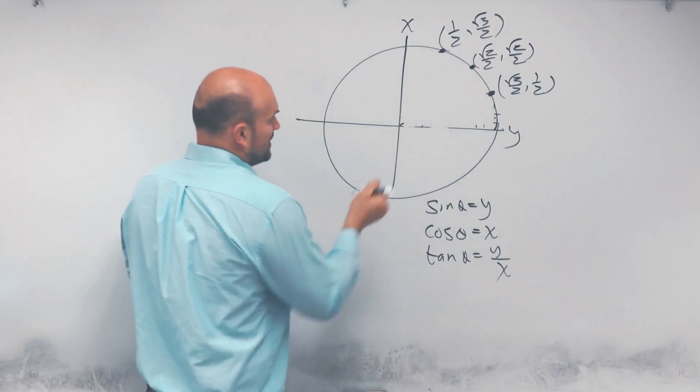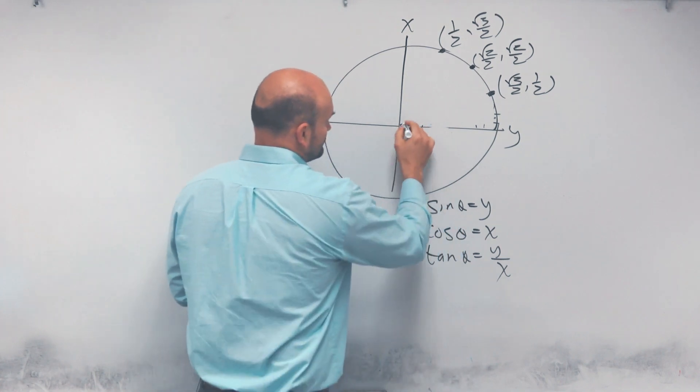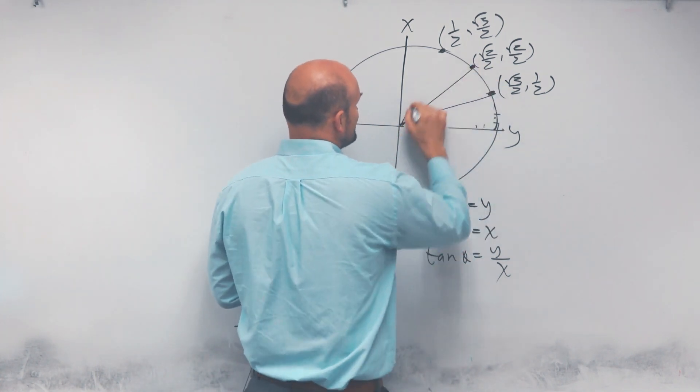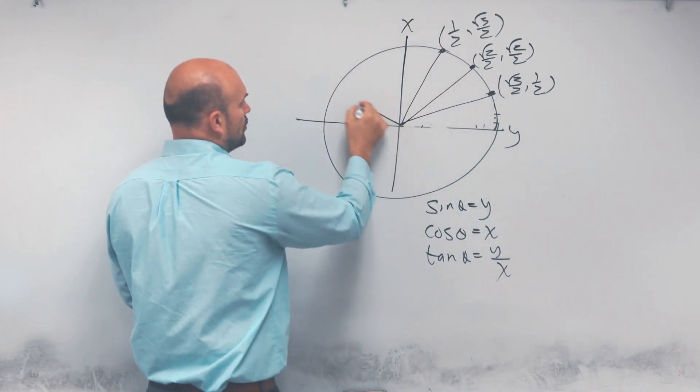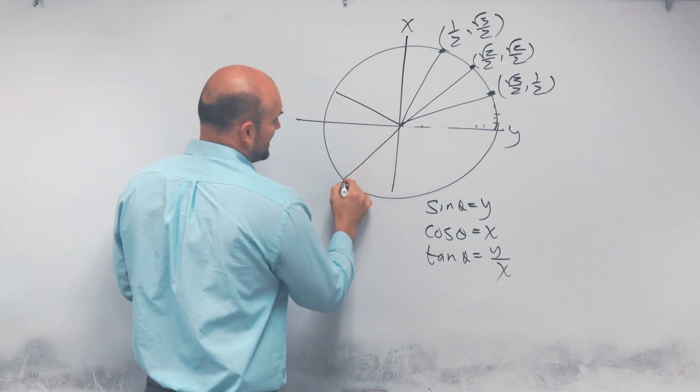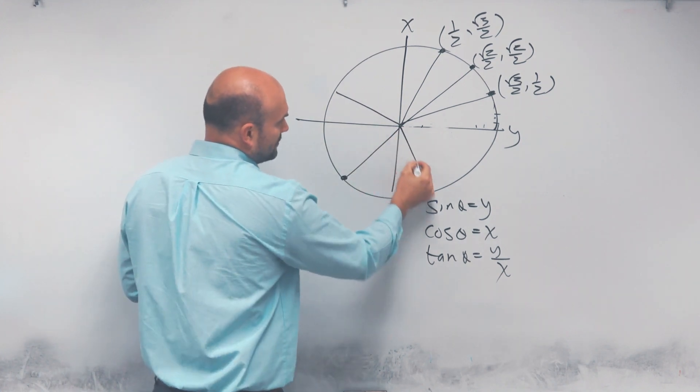We still have these points that represent our angles, but what's starting to happen is interesting. What about when I have an angle over here, or an angle down here, or an angle over here?